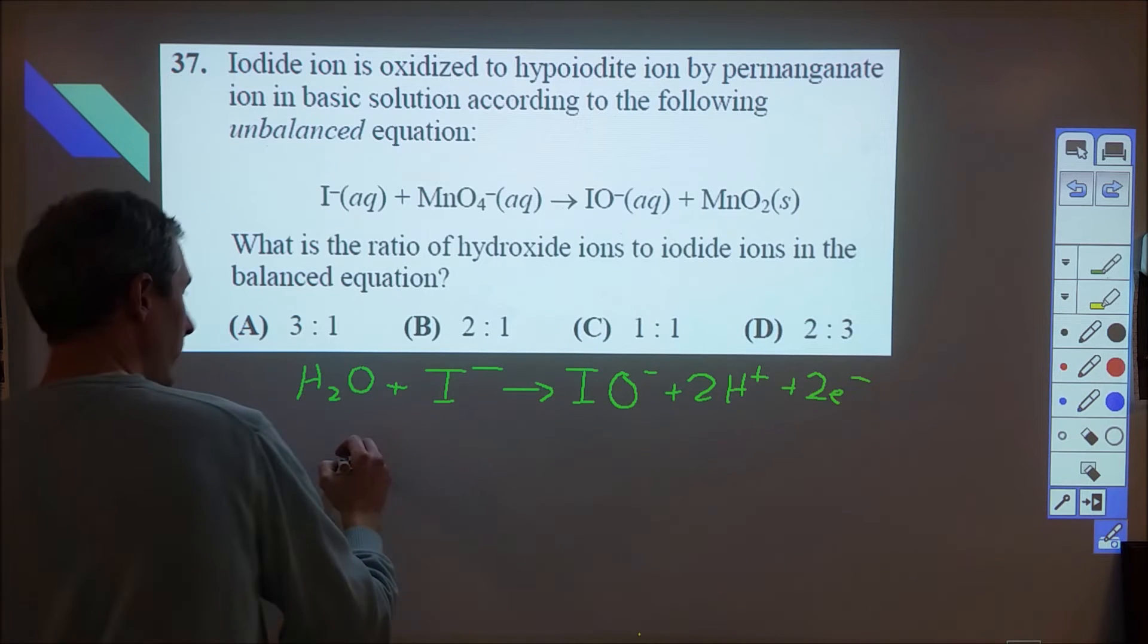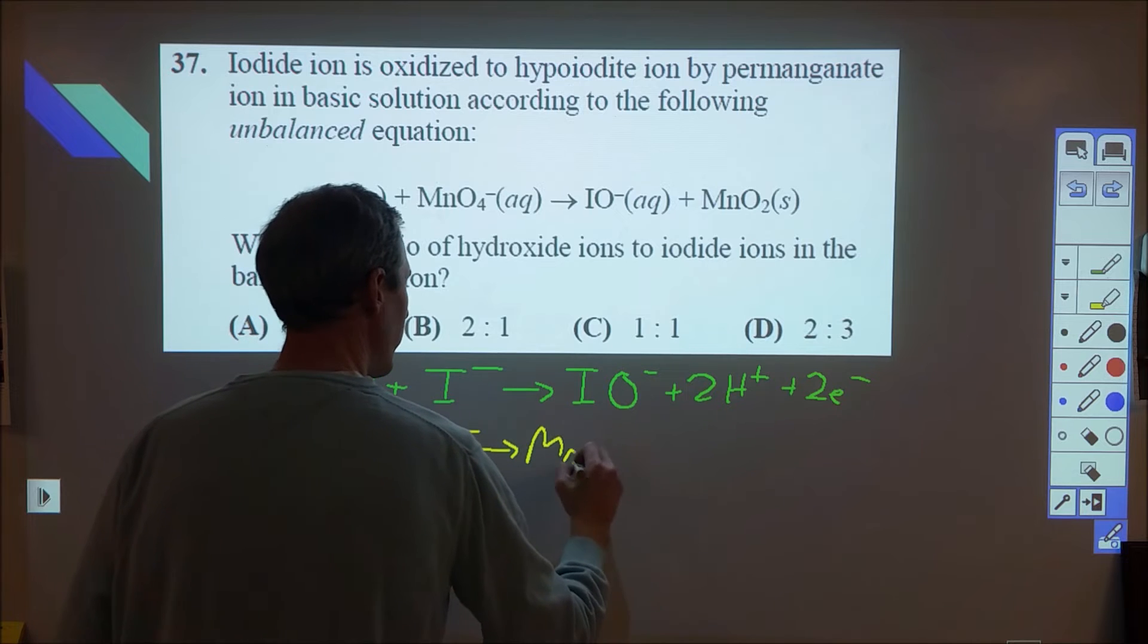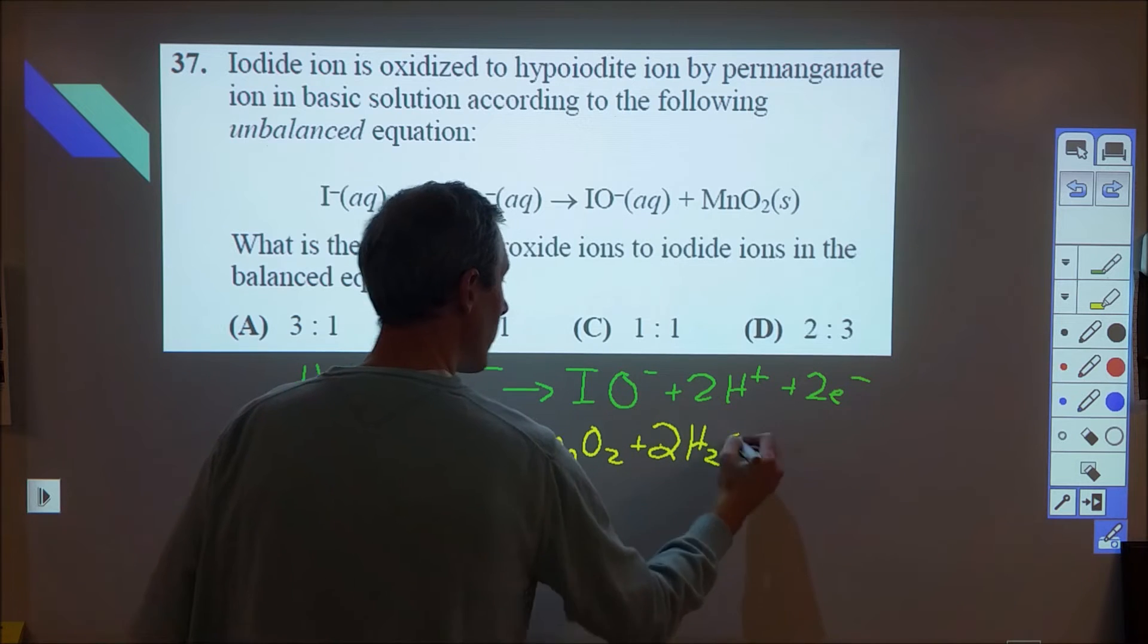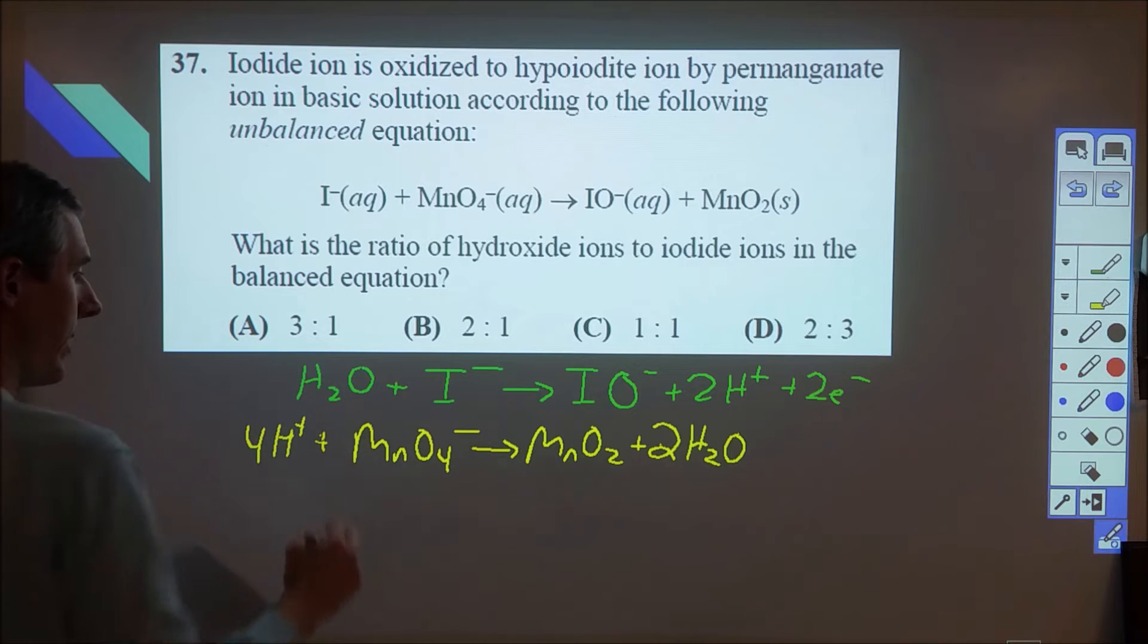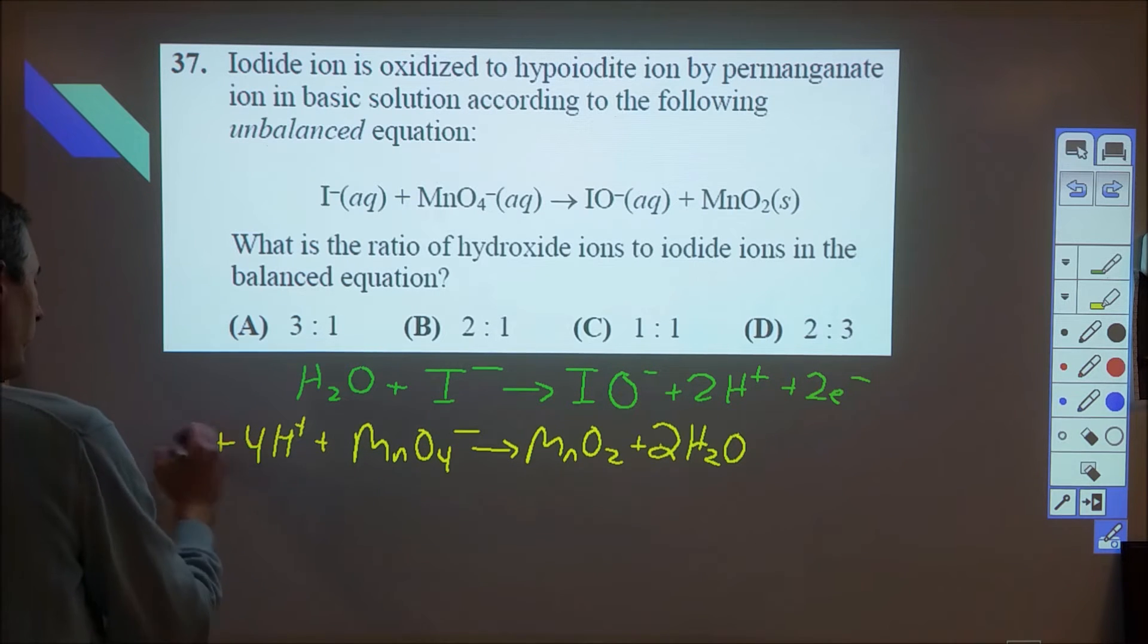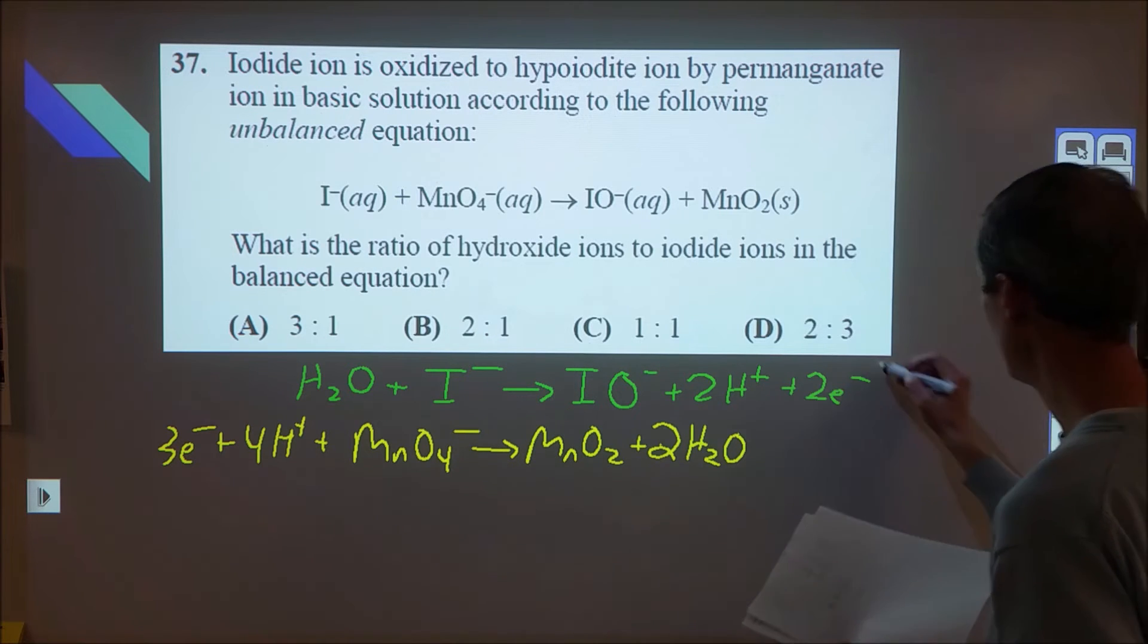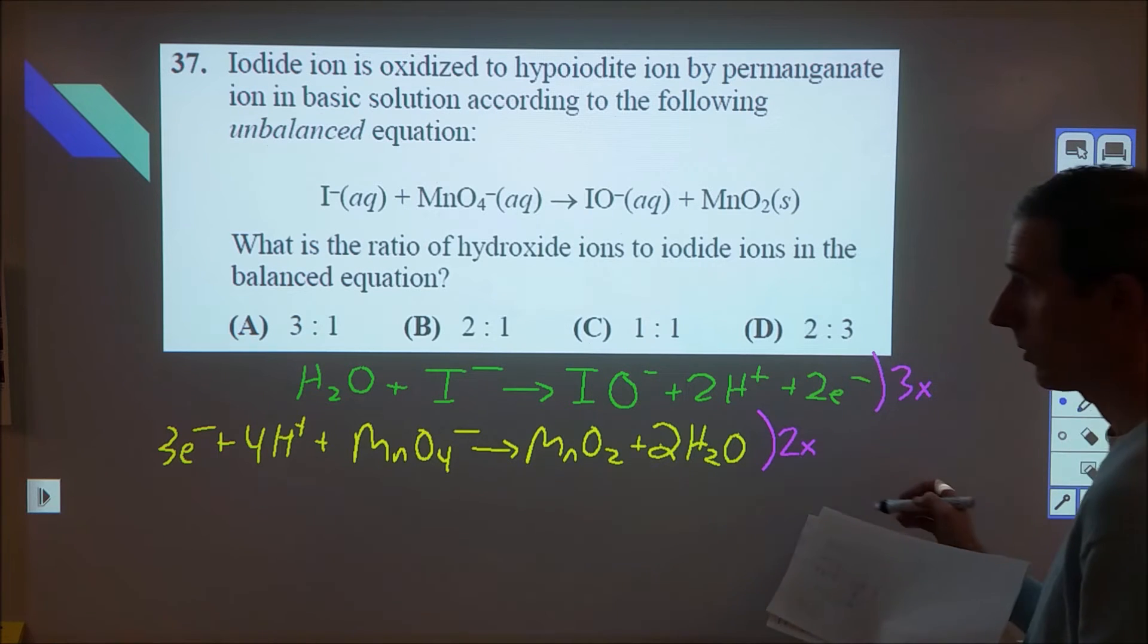Then on our other reaction, we have MnO4 minus turning into MnO2. So we need two more oxygens, so we'll need two waters. That's four hydrogens, so we'll need four H pluses. And our electron total, we have a minus and four pluses, so we'll need three electrons here. So we're good. We've got electrons on both sides. Then we're going to go ahead and combine everything. So we're going to triple this, and we're going to double this in order to get that to work.